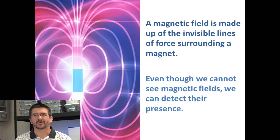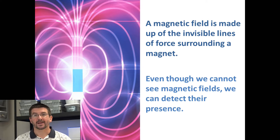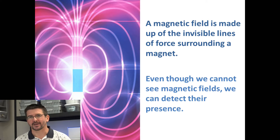As we look at what magnetic fields are, magnetic fields are basically these lines of force — invisible lines of force — that surround a magnet. The magnetic field is what actually gives the magnet its magnetism. Without the magnetic field, it would not be able to attract objects.